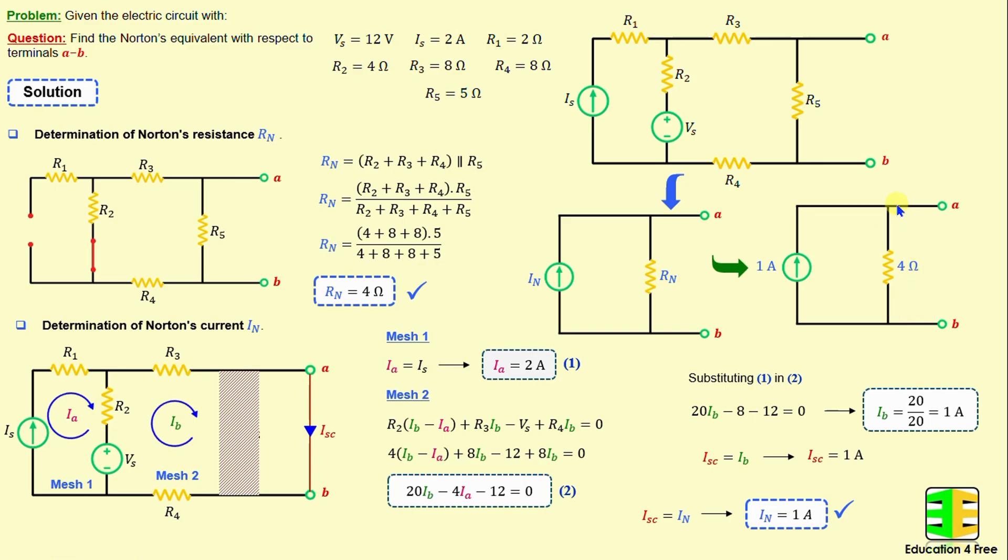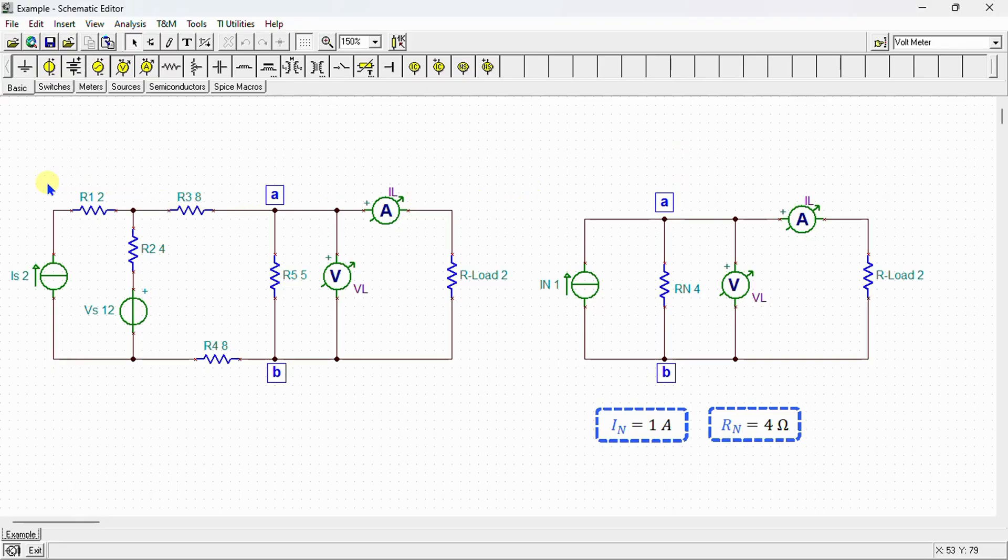After completing the calculations, I performed a simulation using SPICE to verify our results. Now, let's proceed to the SPICE environment. Here is our network drawn in SPICE simulator. This is the original circuit, and this is the Norton's equivalent circuit between terminals A and B. I connected a load resistor between terminals A and B to both the original circuit and the Norton's equivalent circuit, and then I will simulate their behaviors.